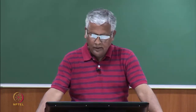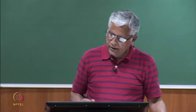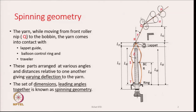The geometrical path that the yarn follows, because of the locations of the lappet guide, front roller nip, balloon control ring, and the ring and traveler combination, all together defines the spinning geometry. This geometry is very important and that is what we are going to discuss now.